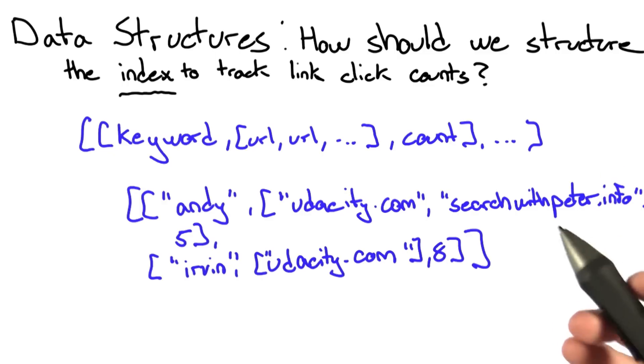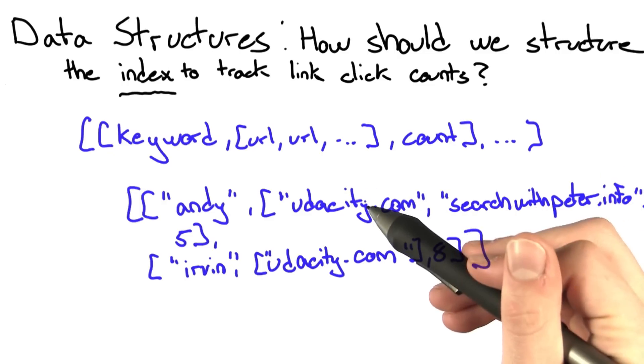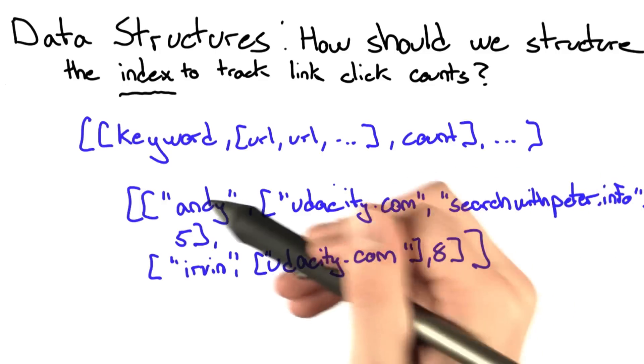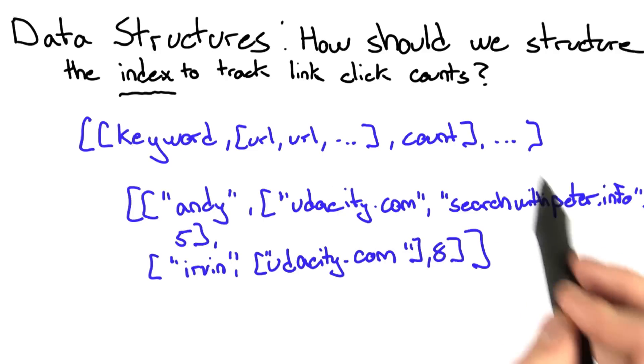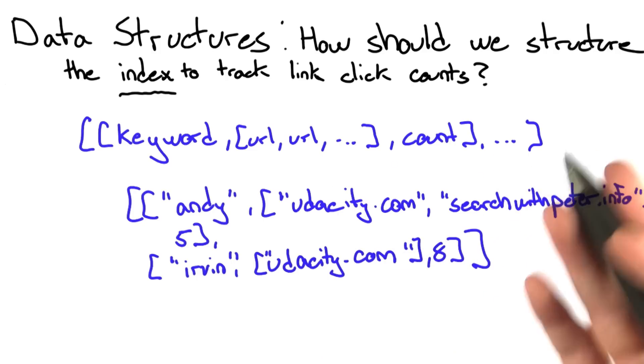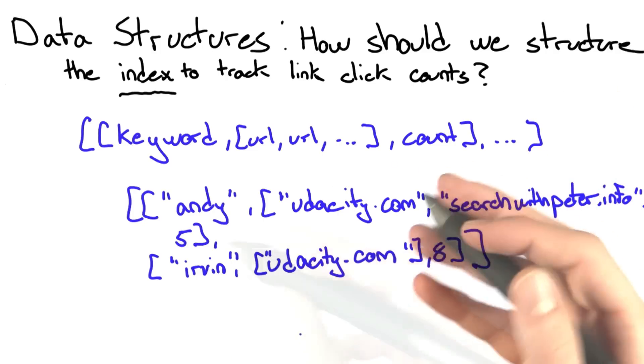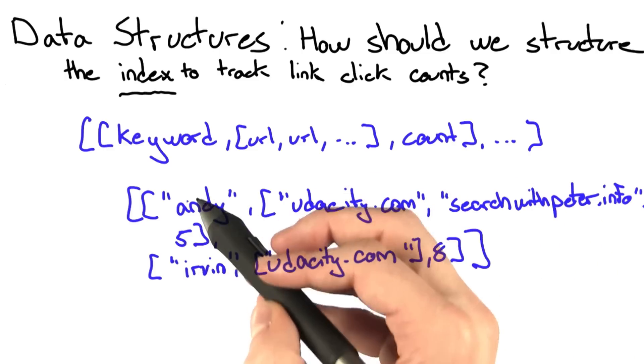Ideally, for this to be useful, we want to count the number of times a user clicks the URL given a certain keyword. That way we can sort these two URLs based on the counts in order to serve our users better search results. As it stands now, there's only one count for each keyword.